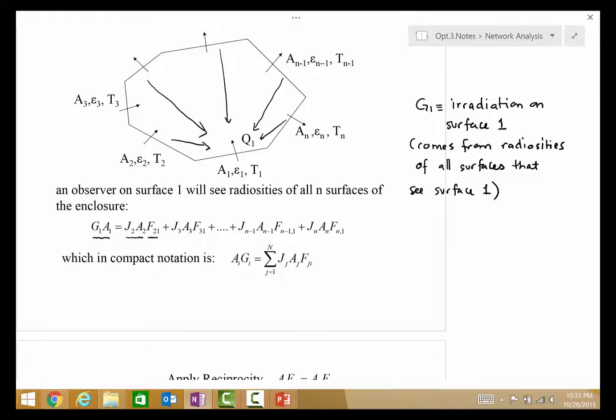You see that this is a very simple statement of the overall power incident on 1 from all other surfaces. In this compact notation, we can think about this as AIGI is equal to the sum sigma JJAJFJI.